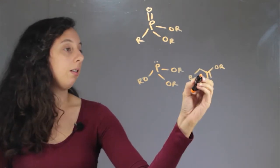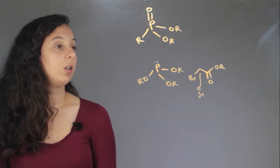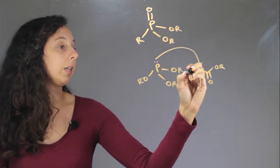So basically the alpha carbon is very electropositive, so this lone pair actually comes in, attacks here, kicking the bromine off.